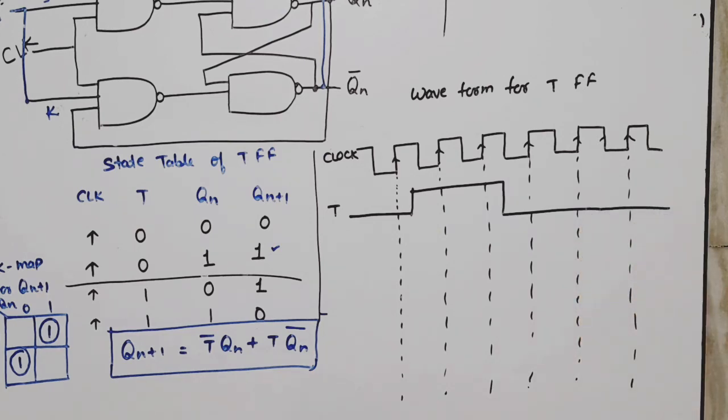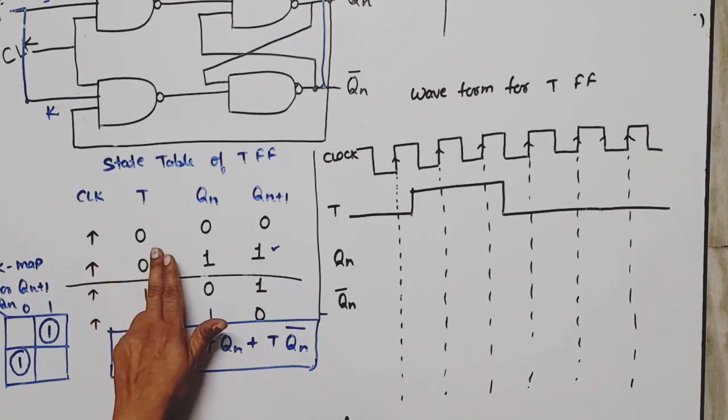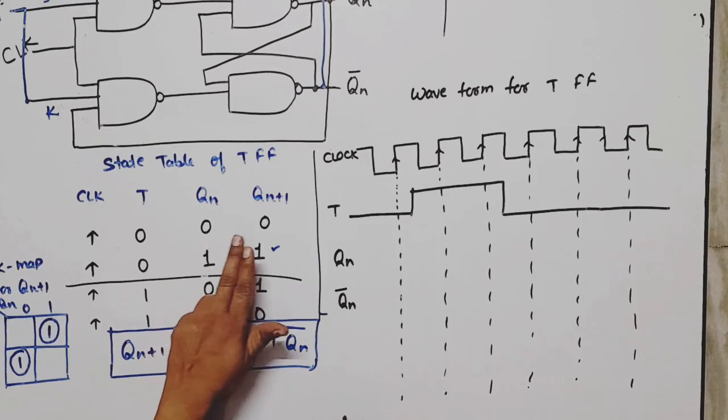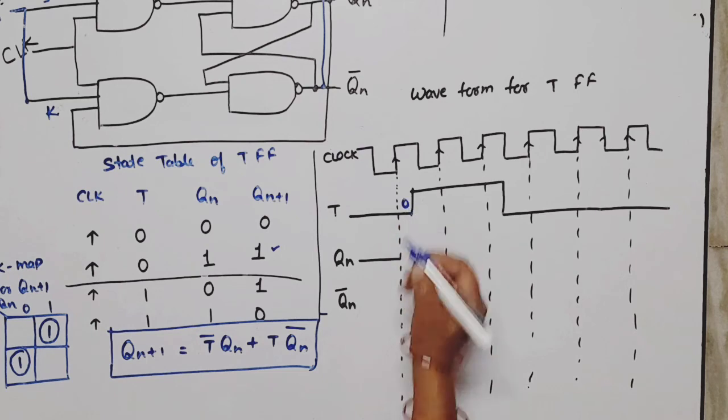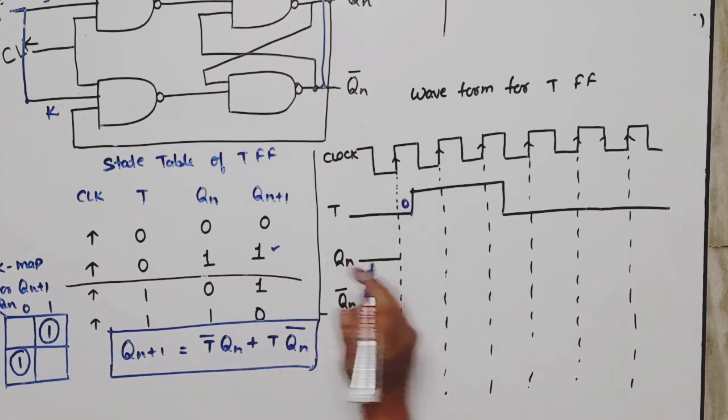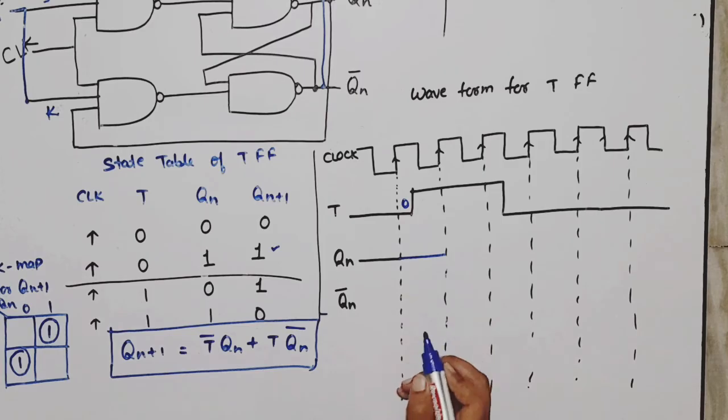What will happen to the output? First, QN will be QN and QN bar will be the complement. If the clock is zero and T is zero, the next state will be zero, meaning there will be no change. So initially, Q will be zero. Now as we have seen, T's value is what? If T is zero, the state will not be changed. It will be in previous state, meaning zero.